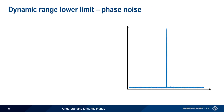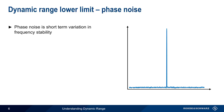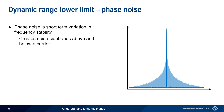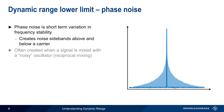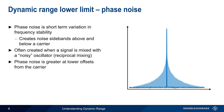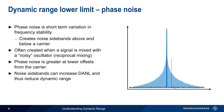Phase noise sometimes also contributes to the lower limit of dynamic range. Phase noise is short-term variation in the frequency stability of a signal. This instability creates noise in the form of sidebands both above and below a carrier. In many cases, this phase noise is created by the mixing of an input signal with a noisy oscillator, and this is often called reciprocal mixing. Phase noise is usually greater the closer you are to the carrier. The noise power in these phase noise sidebands can also increase DANL, and thus the presence of phase noise can sometimes reduce an analyzer's dynamic range.